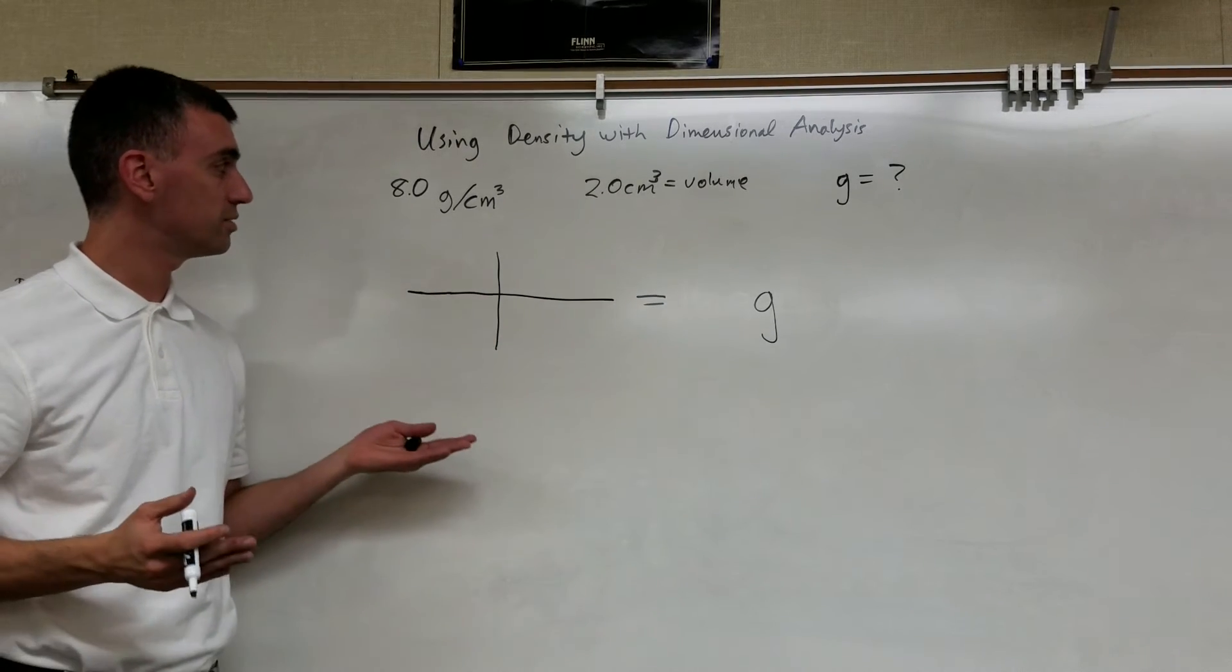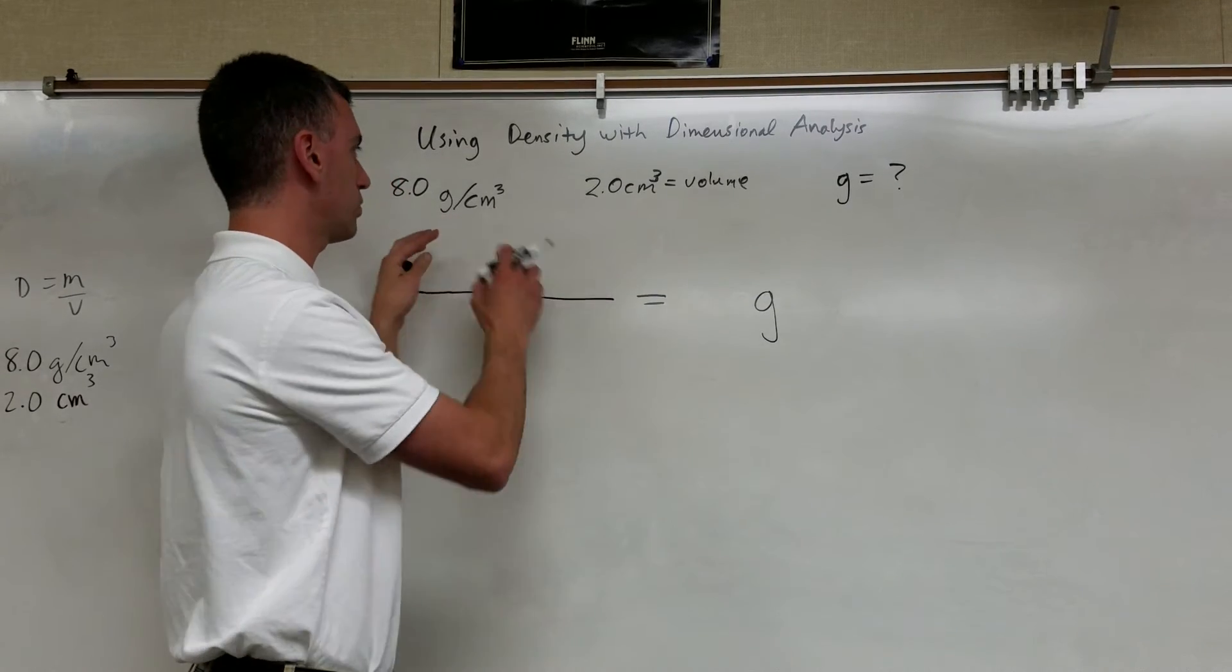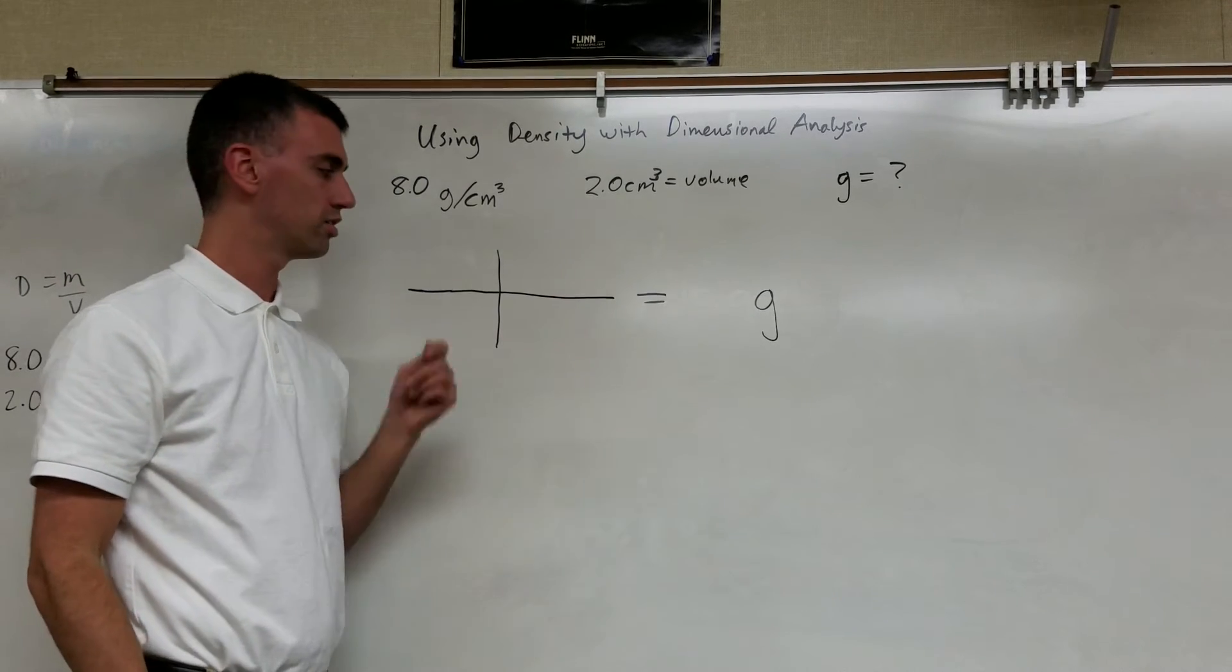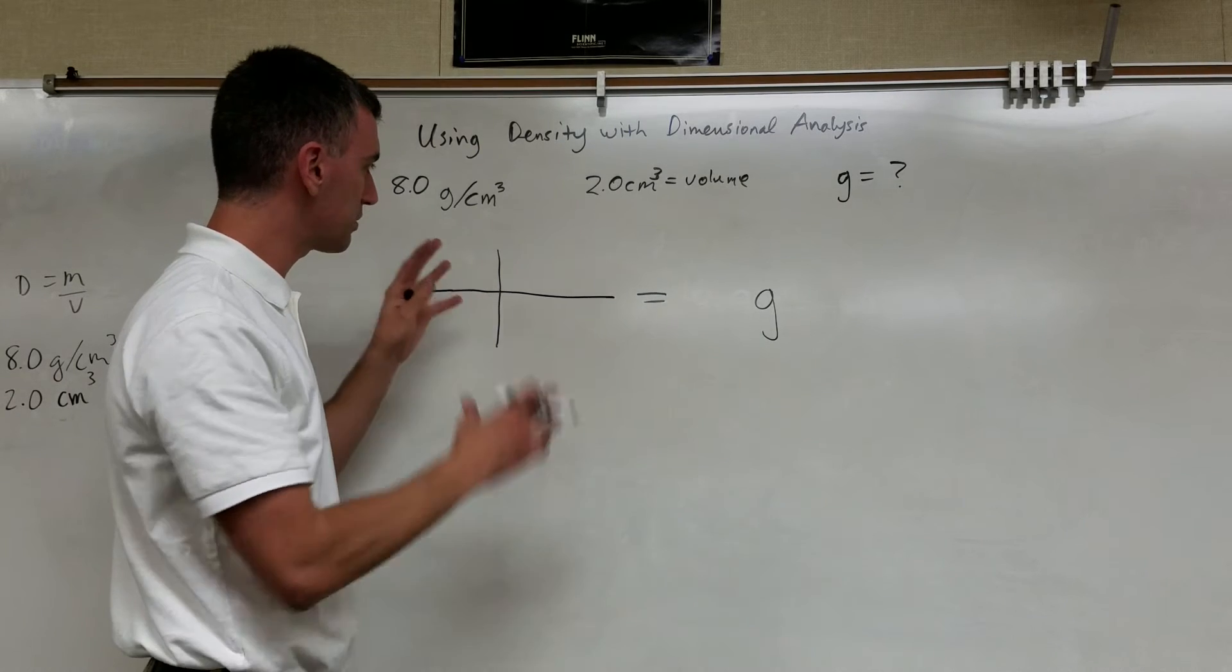So looking at these units, I've got grams per cubic centimeter and I have cubic centimeters. So I need to find a way, something I can do with these two sets of units to give me that. So here's what I'll do. I need grams on top, so I need something that involves grams. So I pick this one first.